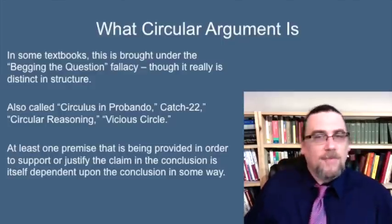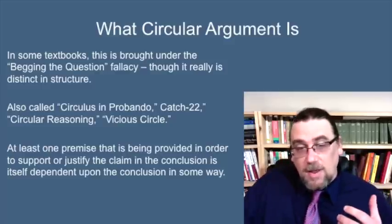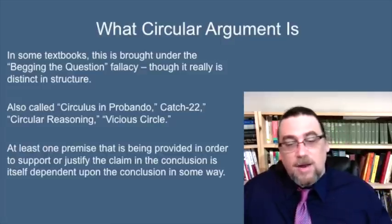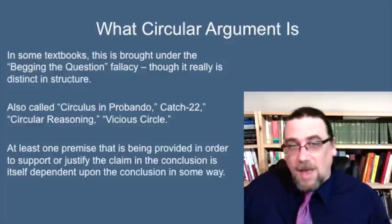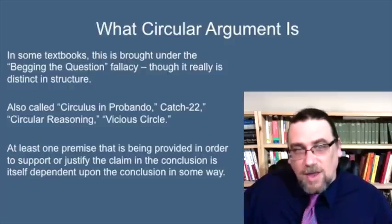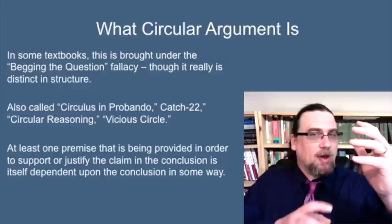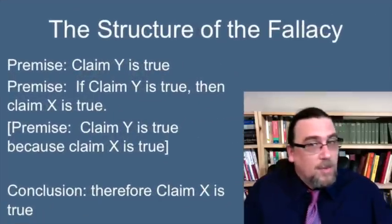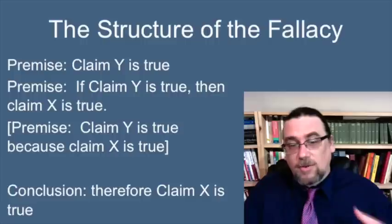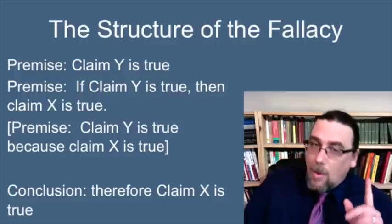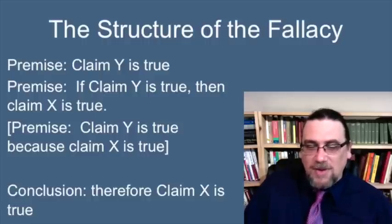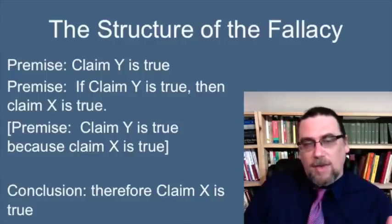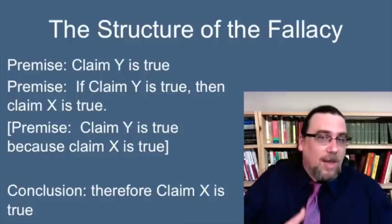When somebody talks about a vicious circle, we're often dealing with this kind of fallacy. What makes it a circular argument is that at least one of the premises being provided to support the conclusion turns out to be dependent on the conclusion itself. You need the premises to establish the conclusion, but you also need the conclusion to establish at least one of the premises.